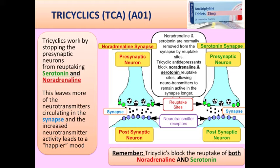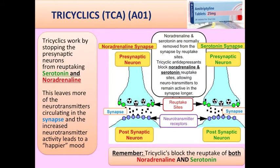Tricyclics stop the reabsorption of noradrenaline. Naturally, some of the noradrenaline that comes down reabsorbs back up to the presynaptic cell. The TCAs block that reabsorption, so you've got more noradrenaline available. Not only does it block the noradrenaline going back up, but it also blocks the serotonin going back up. There are two synapses — the noradrenaline one and the serotonin one — and the tricyclics work to block the reuptake of both those neurotransmitters.